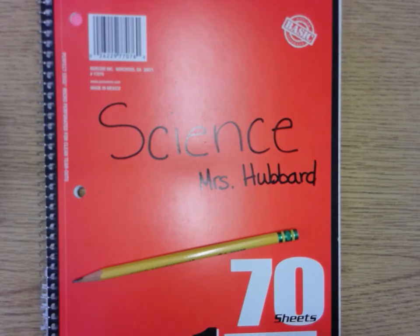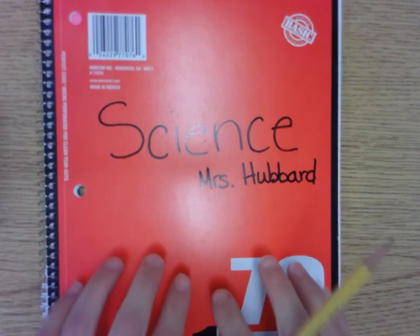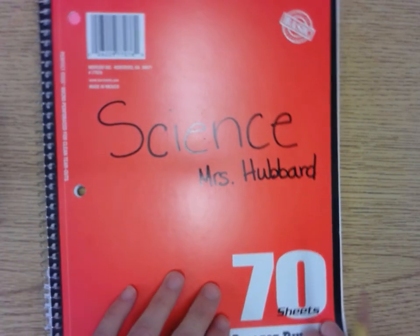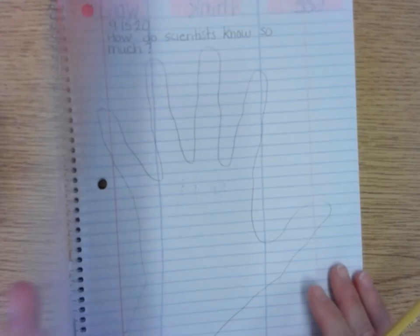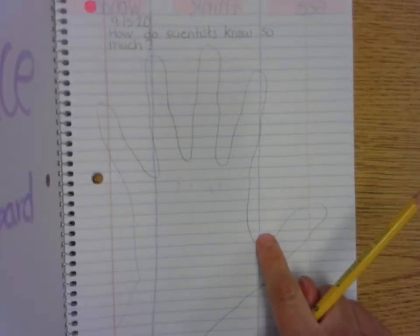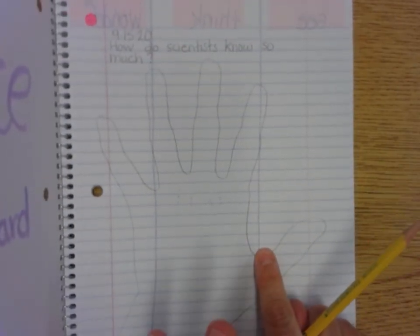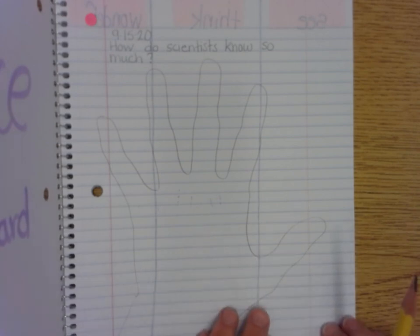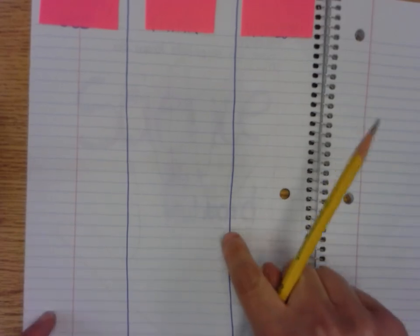Whenever we're working in notebooks we start at the front, take the cover and open it. In there you have your hand, but when we did the work of 'how do you know, how do scientists know so much?' — and then we're going to turn the page, go to the back, and I like to fold it back.